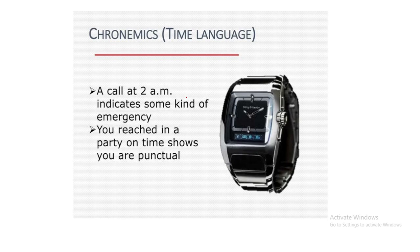Chronemics is basically the time language. For example, if somebody calls you at 2 a.m. in the morning, it indicates some kind of emergency. And if you reach a party on time, it shows that you are punctual. Time is also a language and conveys a lot of information about the personality of the other person or the situation of the communication.